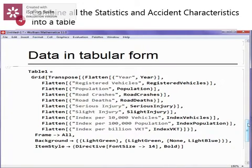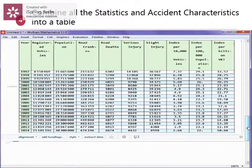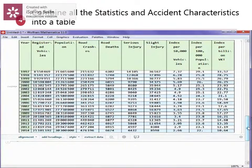In this part, we will combine all the statistics and accident characteristics in a tabular form. As we can observe, all the statistics are arranged according to the year and other accident characteristics.